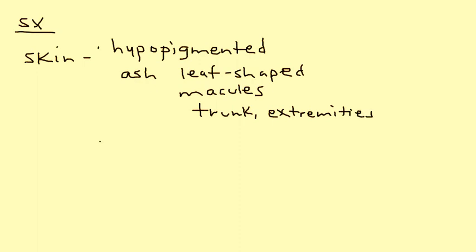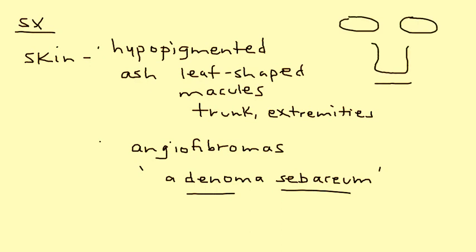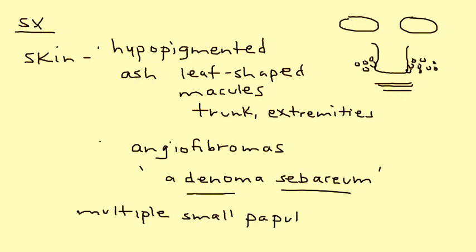The other type of skin condition very common in tuberous sclerosis is known as angiofibromas, and these are given a special name — they're called adenoma sebaceum. If you type in adenoma sebaceum, you will definitely get a very characteristic photo. Basically, you have these tiny papules that appear on the face, very close to the nose and on the cheeks. They're described as multiple small papules, and they're very characteristic for tuberous sclerosis.